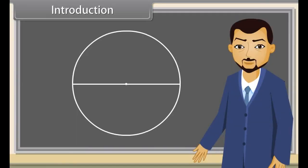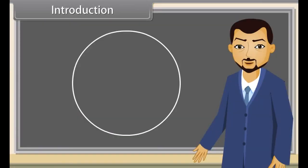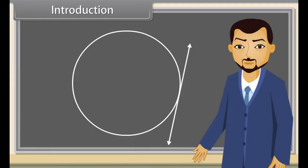Yes, you are right. And what if I mark a line segment here? What is this now? It's a chord. Correct. And what do we call this line? Tangent. Yes, this is a tangent of the circle. Today we will study about circles and tangents.